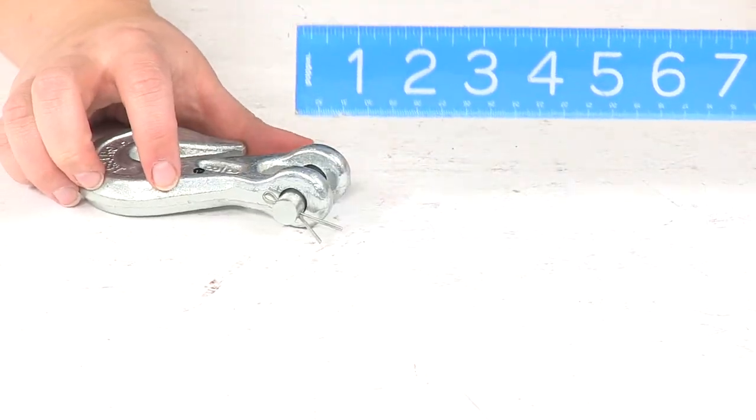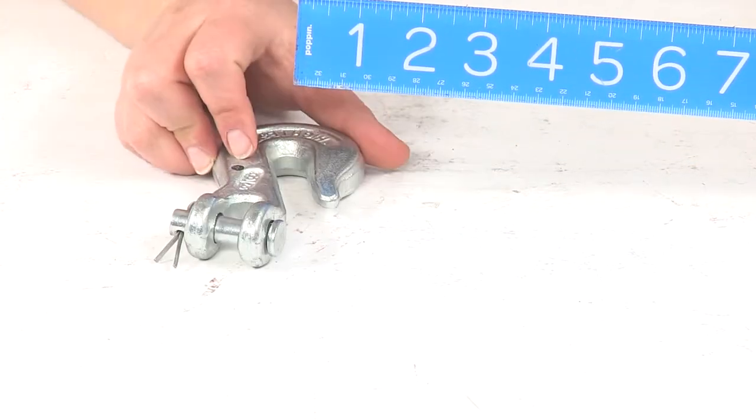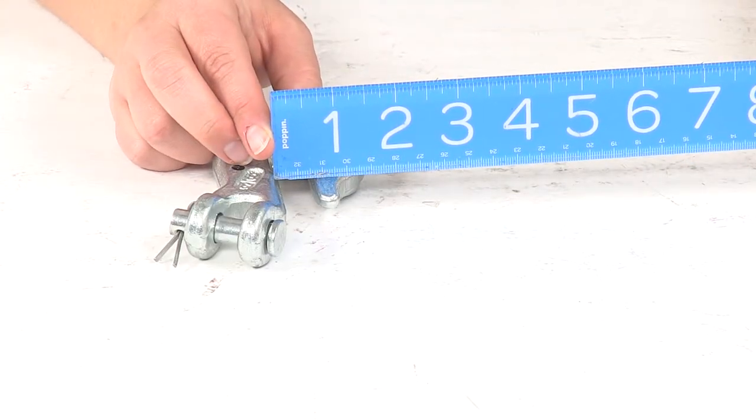The diameter of the clevis pin is going to be 3 1/8 of an inch, and the opening for the hook is just about half an inch.